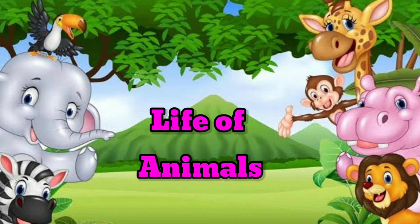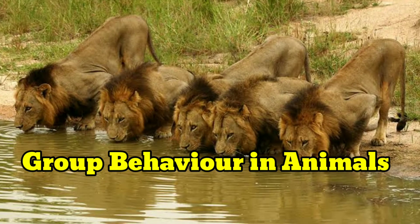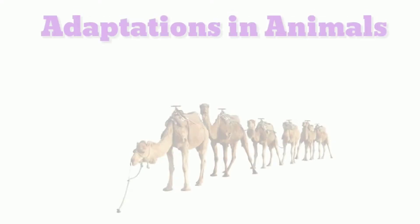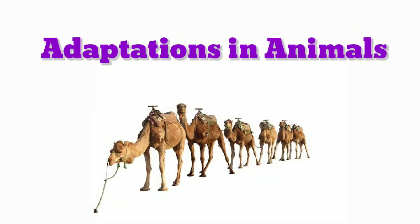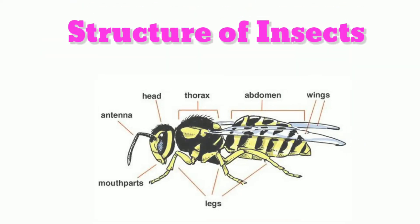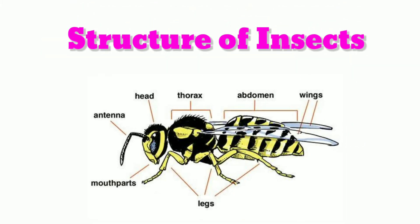Children, we have learned from this lesson. First, group behavior in animals — vilangukal in kuru nadatthai. Next, adaptations in animals — vilangukalil thagavamaippu. Then, structure of insects — poocheean udalamaippu.